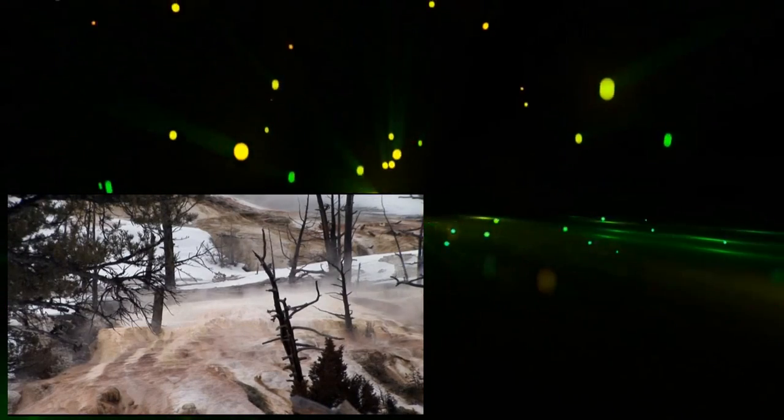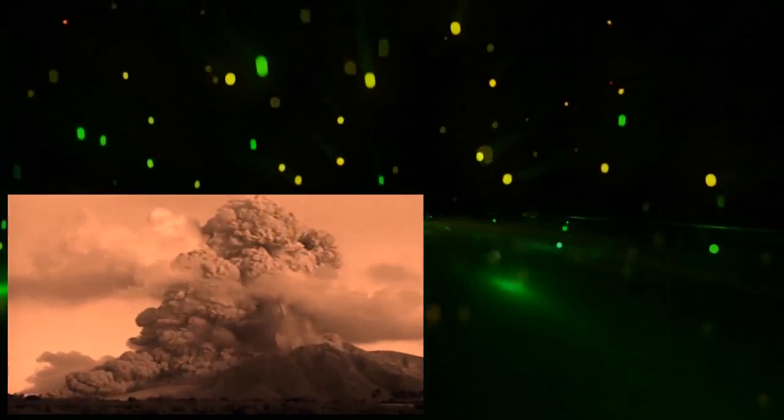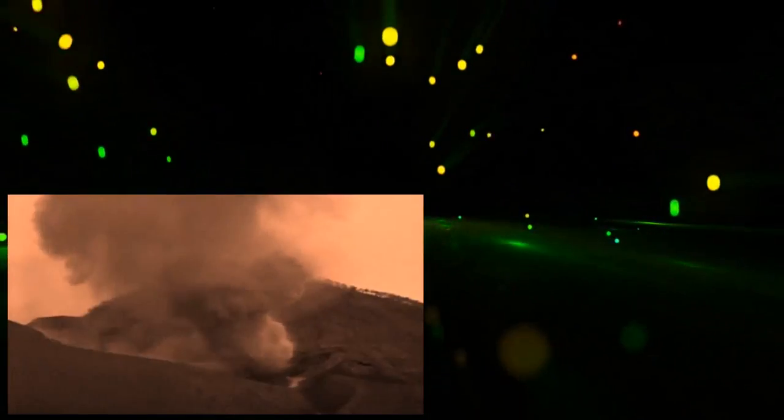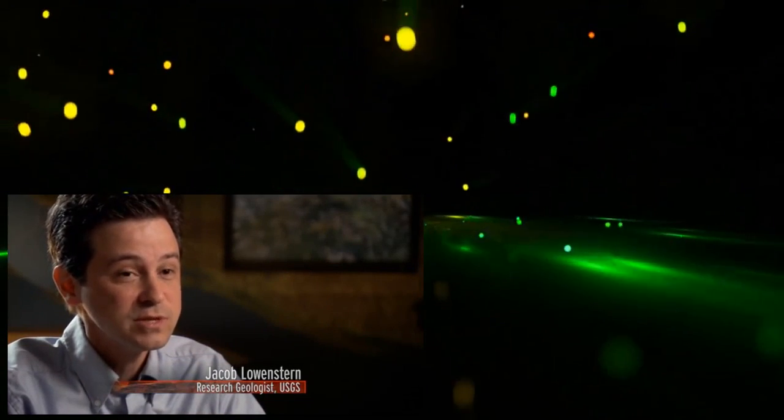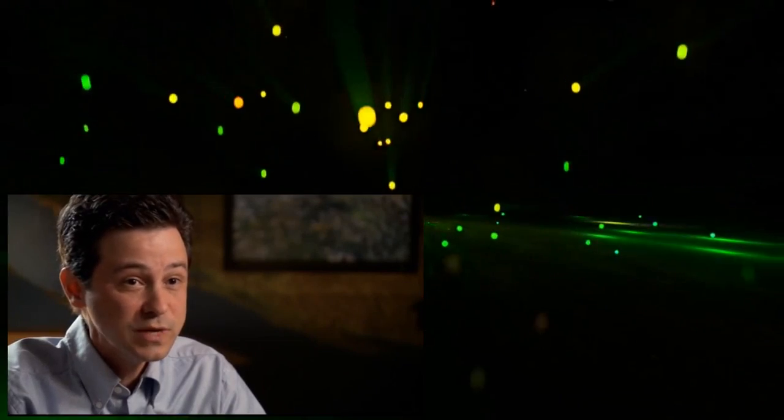Yellowstone's last super-eruption occurred 640,000 years ago. It started as a single massive volcano but soon turned into a series of eruptions. The entire sequence of pyroclastic explosions may have taken as little as two weeks to happen.